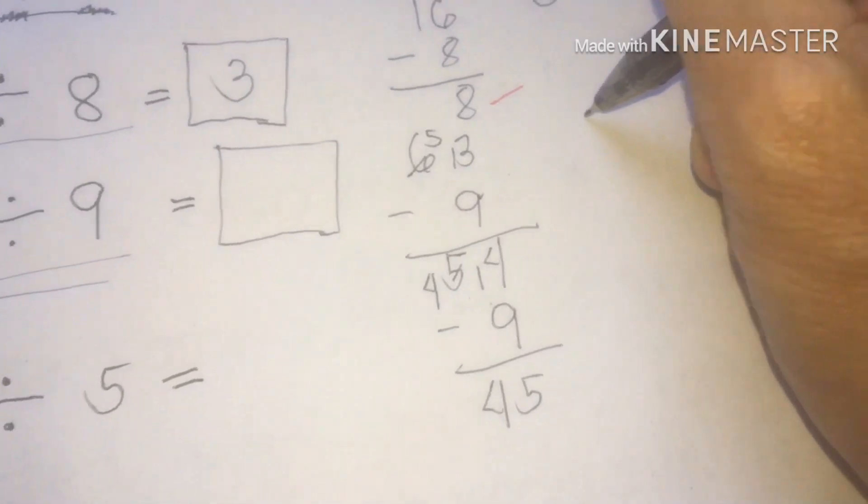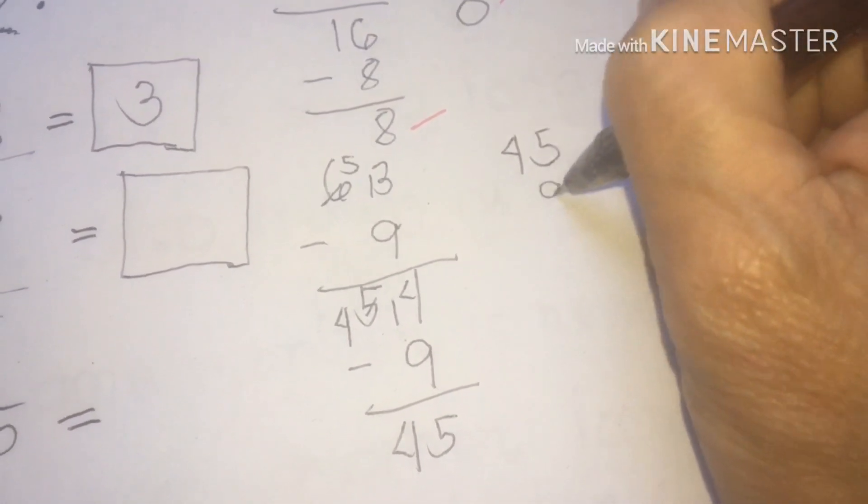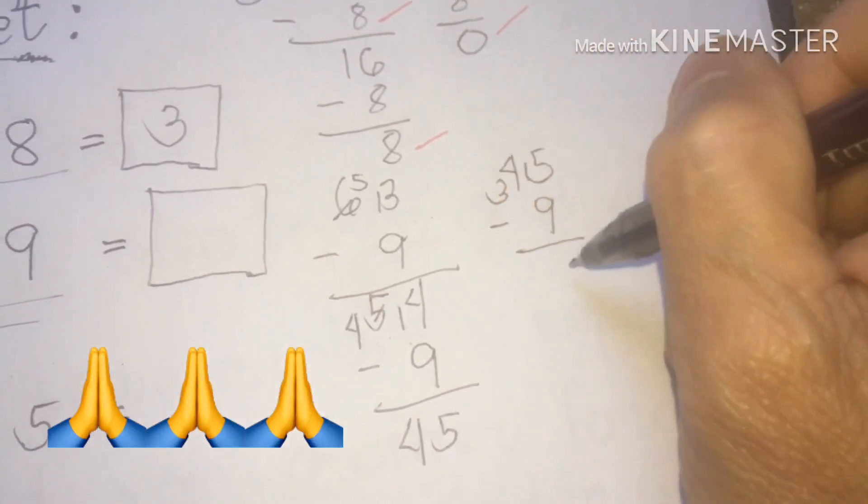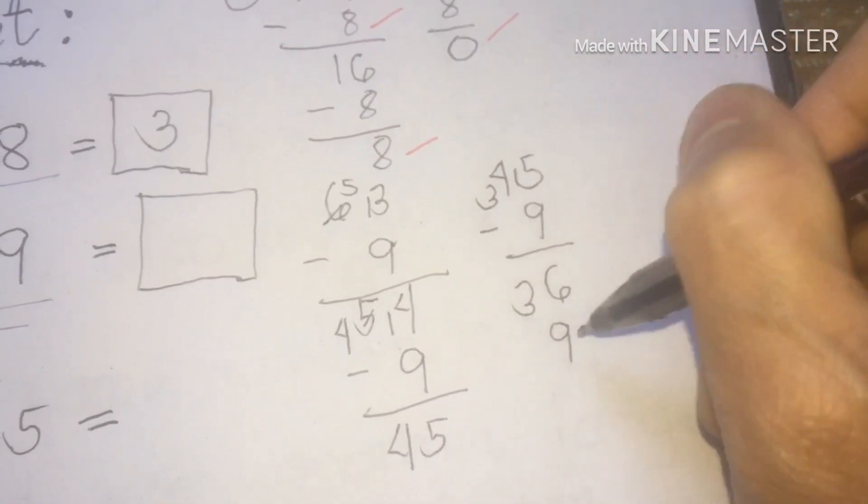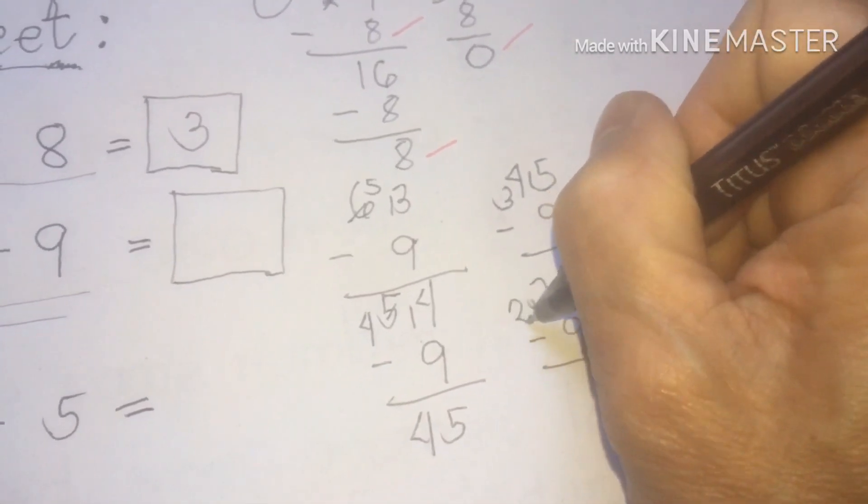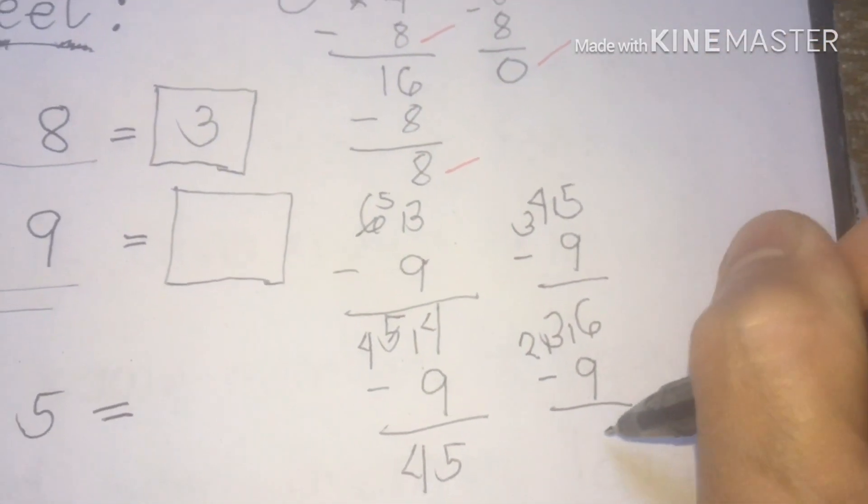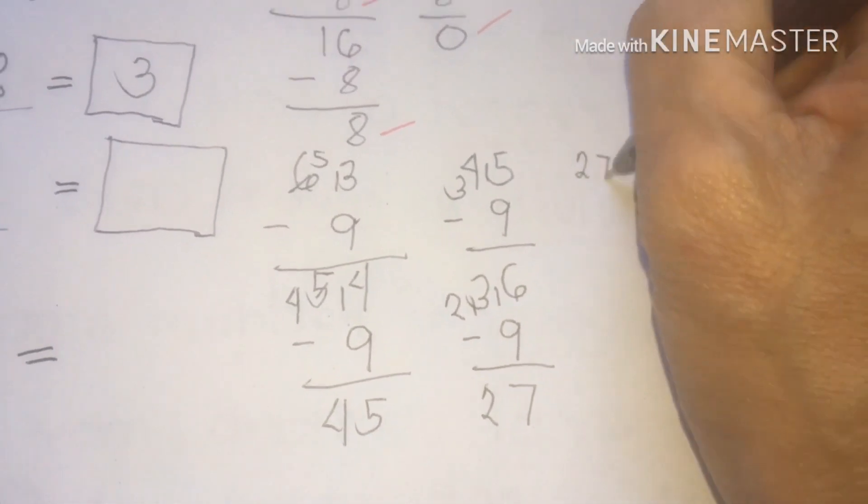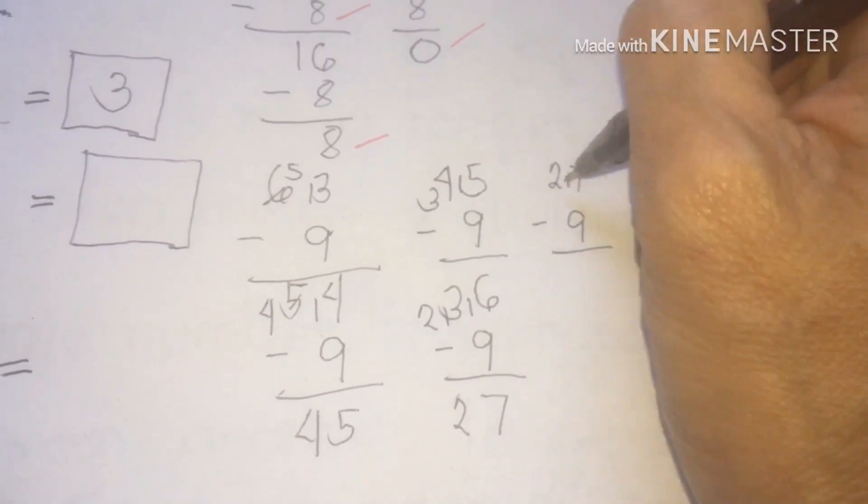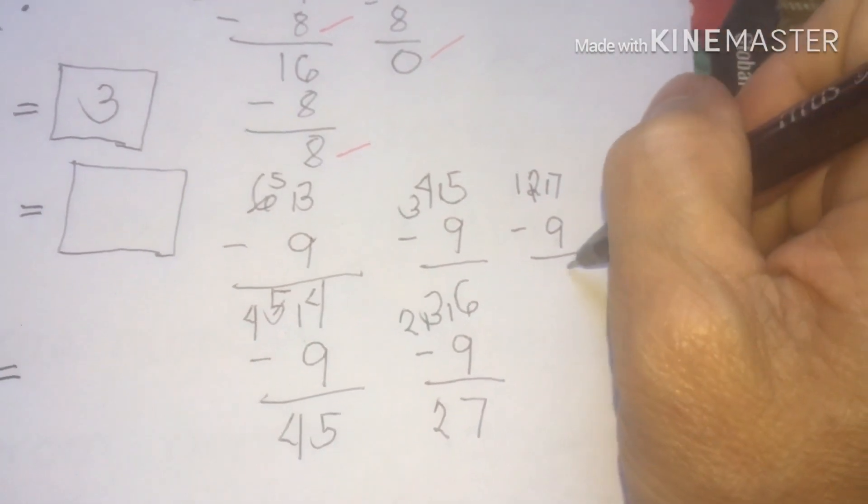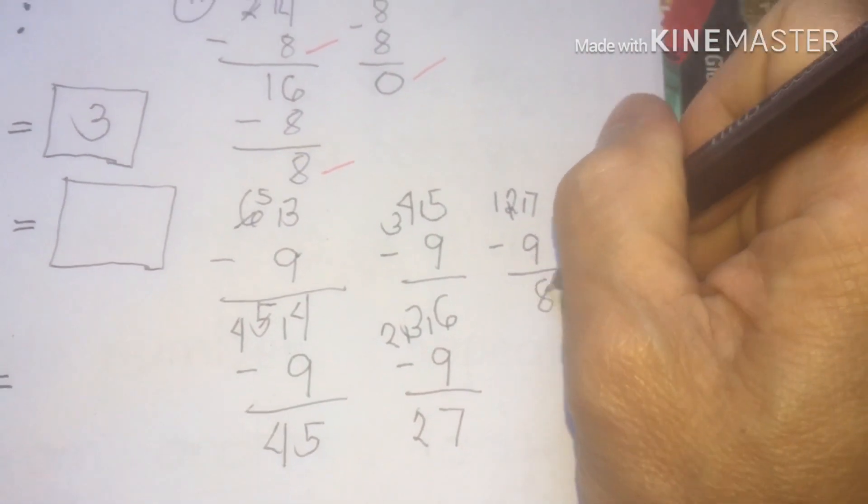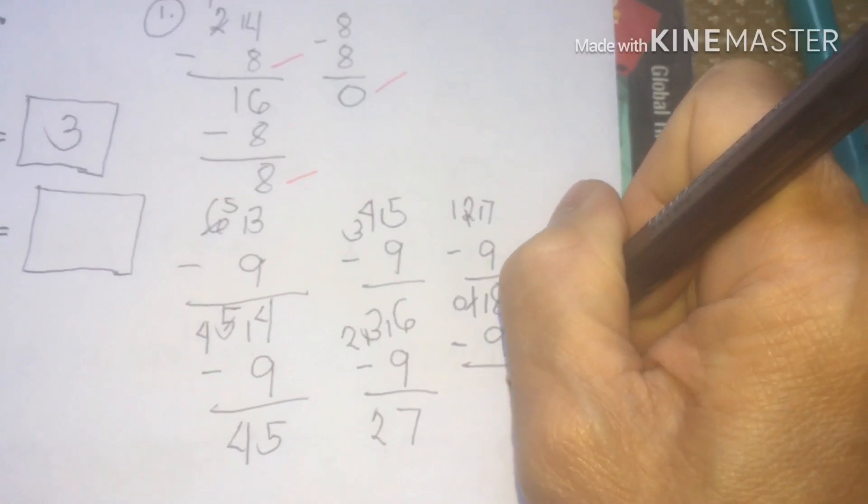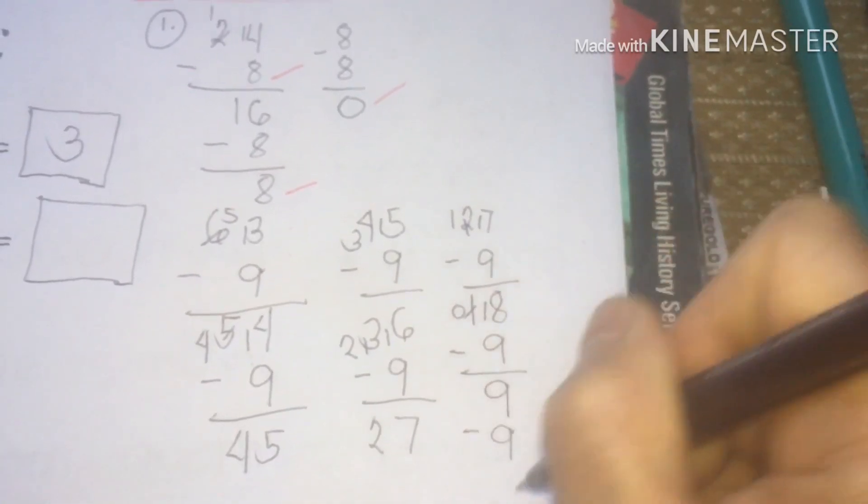So 5 then 4. Let's continue here. We have 45 minus 9. That's 36. Let's continue minus 9. So 3 becomes 2. Let's regroup. Continue class. 27 minus 9. So we have 18. Continue class. 18 minus 9. So we have 9. Minus 9 class. We have 0.